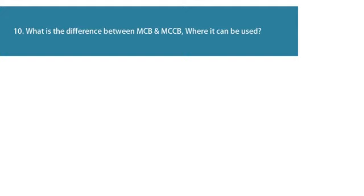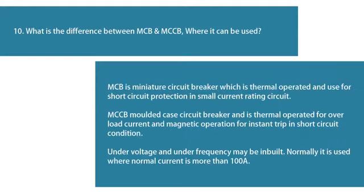Question 10: What is the difference between MCB and MCCB, and where are they used? MCB is a miniature circuit breaker which is thermally operated and used for short circuit protection in small current rating circuits. MCCB is a molded case circuit breaker — thermally operated for overload current and magnetically operated for instantaneous trip in short circuit conditions. Under-voltage and under-frequency protection may be inbuilt. Normally it is used where normal current is more than 100A.